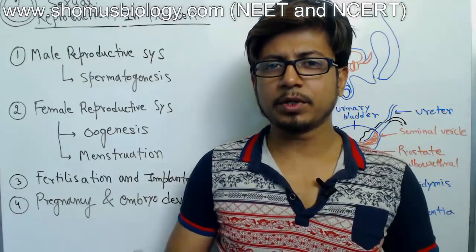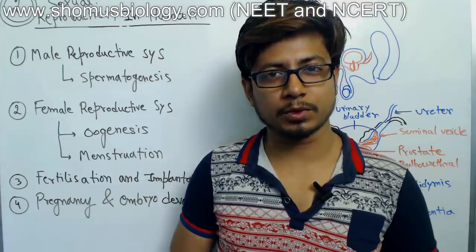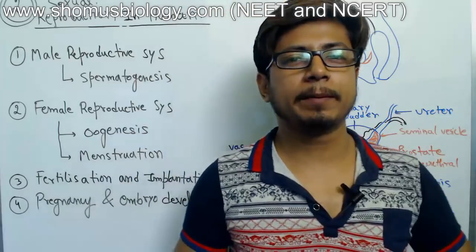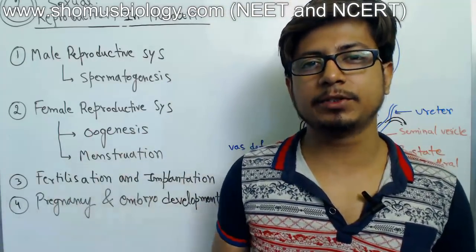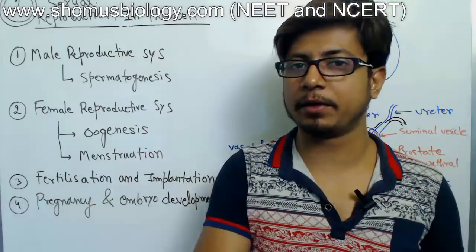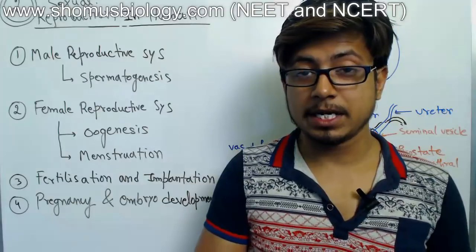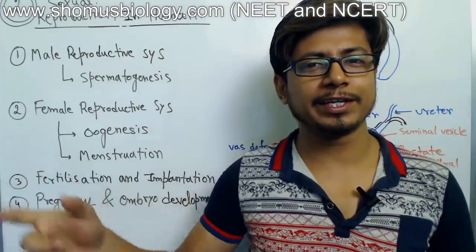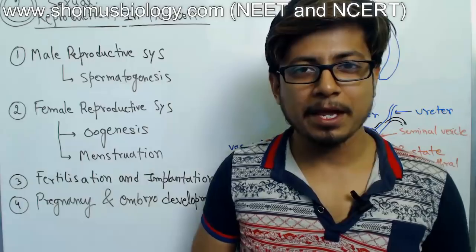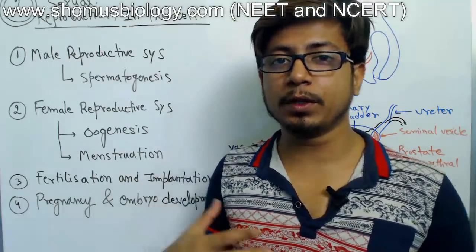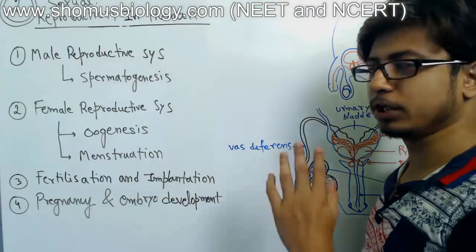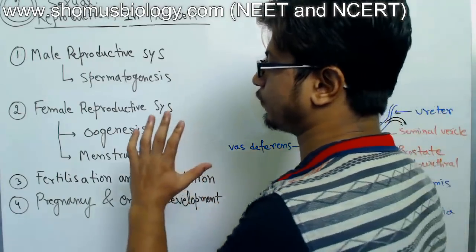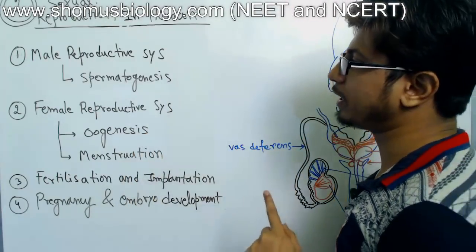Welcome back friends. Welcome to another video from Shomu's Biology. In this series of videos we're talking about reproduction. In the last series we talked about reproduction in flowering plants — sexual reproduction known as double fertilization. In this series we'll be talking about reproduction in humans, and we can divide this chapter into four main components.